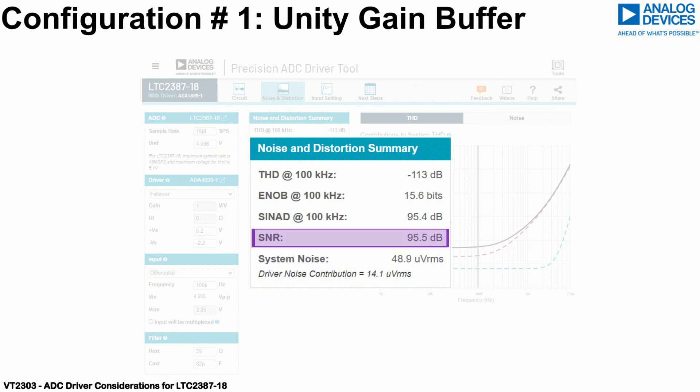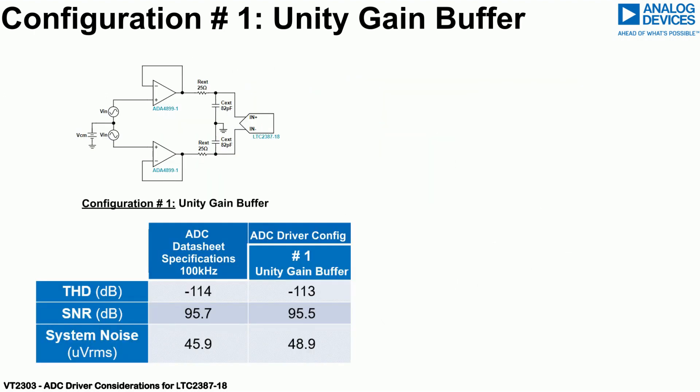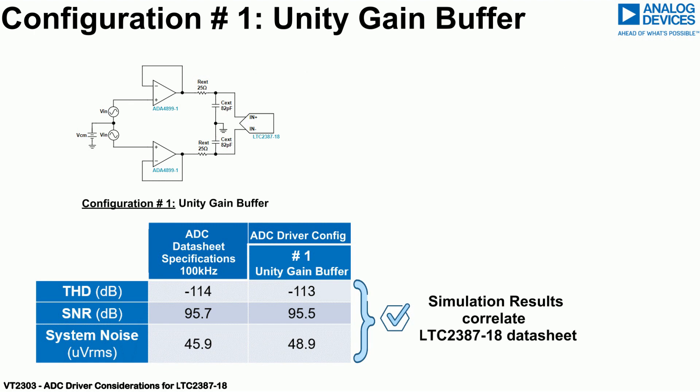The signal-to-noise ratio, SNR, is projected to be 95.5 dB. This performance correlates with the ADC datasheet specification at 100 kHz, indicating that the ADA 4899-1 unity gain amplifier circuits have very little impact on the ADC expected noise performance.